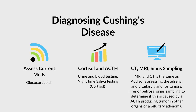With Addison's you have too little cortisol — you need to add it back in — whereas with Cushing's you have too much of it. So first, you want to assess and see if the patient is on any current medications. Look at the basics: are they on a glucocorticoid? Is that what's causing it? If so, you could stop there and adjust or completely discontinue that medication depending on the patient. Assess that first.